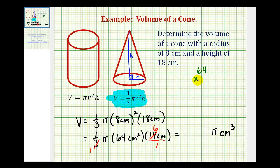So 64 times six, that would be 24, carry the two. Six times six plus two, that'd be 38. So the exact volume would be 384 pi cubic centimeters.